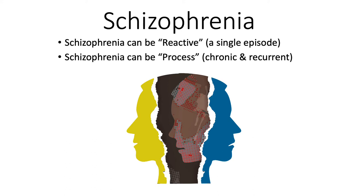A person can be diagnosed with schizophrenia at any age, but the most common time for a person to exhibit schizophrenic symptoms for the first time is during young adulthood, roughly between the ages of 18 and 30. It's relatively rare for a young child to be schizophrenic, and if it hasn't shown up in an individual well before they're middle-aged, it's unlikely to happen after that.